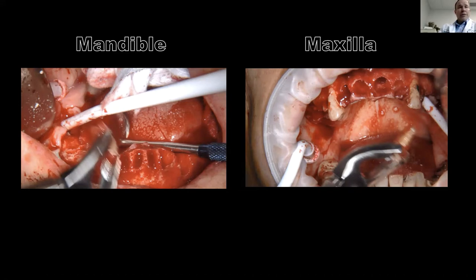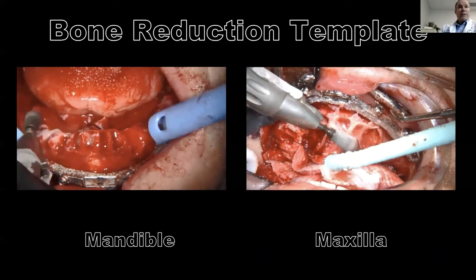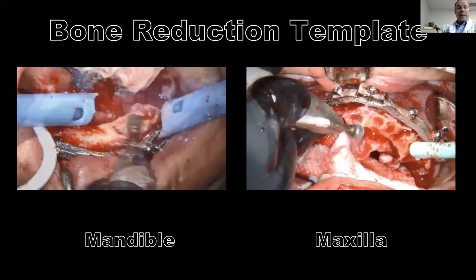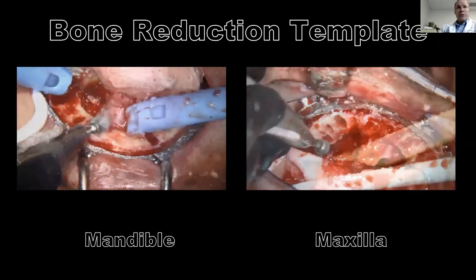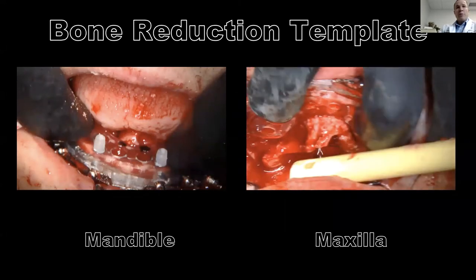Once the pin guide is removed, the teeth are extracted and the bone is reduced down to the level of the fixation base. This happens on every single dentate case. Variations only occur based on the doctor's technique on bone reduction or tooth extraction — perhaps doing socket preservation or socket shield. But as far as Chrome implementation: the pin guide delivers the fixation base, bone is reduced down to the level of the fixation base, then the carrier guide goes in.